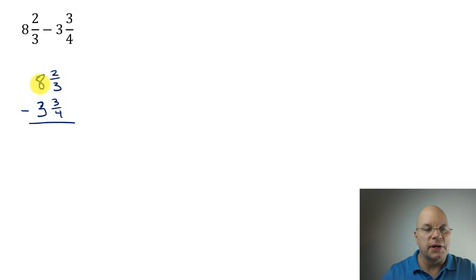First of all, we've got our place values lined up—we have wholes here and our fractional parts here. But we do not have like terms. We have thirds and fourths. You can't subtract fourths from thirds. They're not the same size pieces, so we'll need to create like terms.